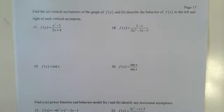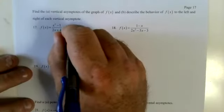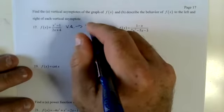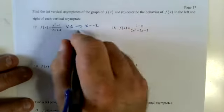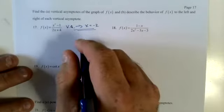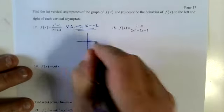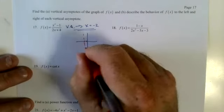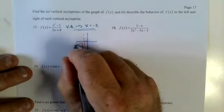Find the vertical asymptotes and describe the behavior to the left and right of each vertical asymptote. I'm just going to graph these to keep my life simple. Vertical asymptote where the bottom equals zero — x equals negative 2. So if I graph this, at x equals negative 2 you get something weird like this.